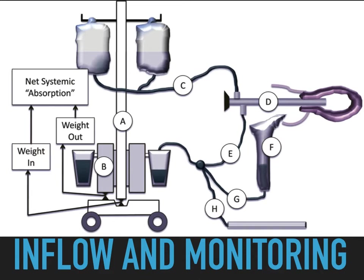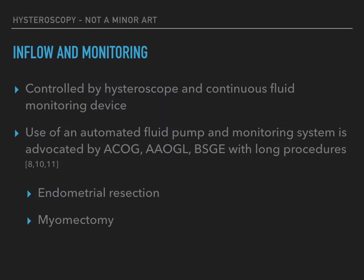Furthermore, the intrauterine pressure can be titrated to aid visualization but also limited to avoid complications. Fluid monitoring is essentially controlled by the hysteroscope and a continuous fluid monitoring device. A hysteroscope with a dual outer sheath or dual port system with an outflow port directly connected to a vacuum collecting system gives a more accurate assessment of the fluid deficit, as less media is lost in the drapes, towels, or on the operating floor. Two systems exist: manual systems and automated systems. Where automated systems are not available, the manual technique is used.